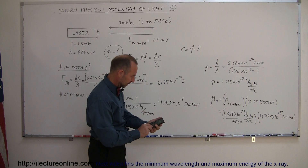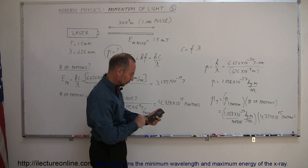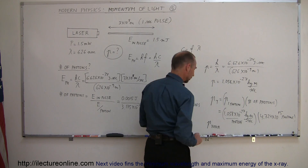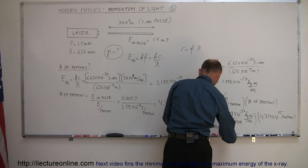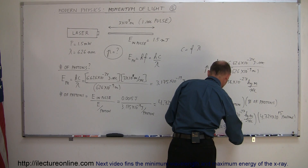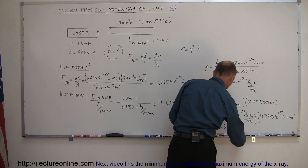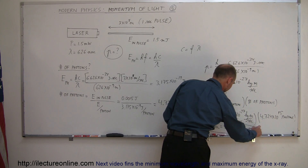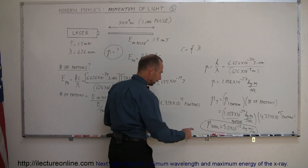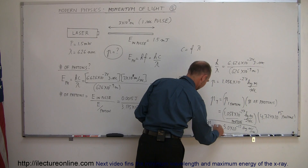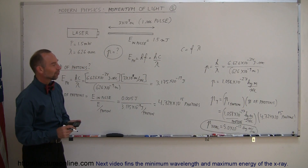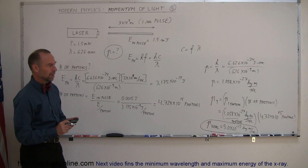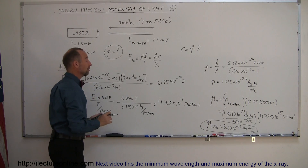Multiplying those two together, the total momentum in the beam equals 5.0×10⁻¹² kilogram·meters per second. That would be pico, so 5 pico kilogram·meters per second. Very small momentum, but it's just in a single pulse of a laser beam, one second long.